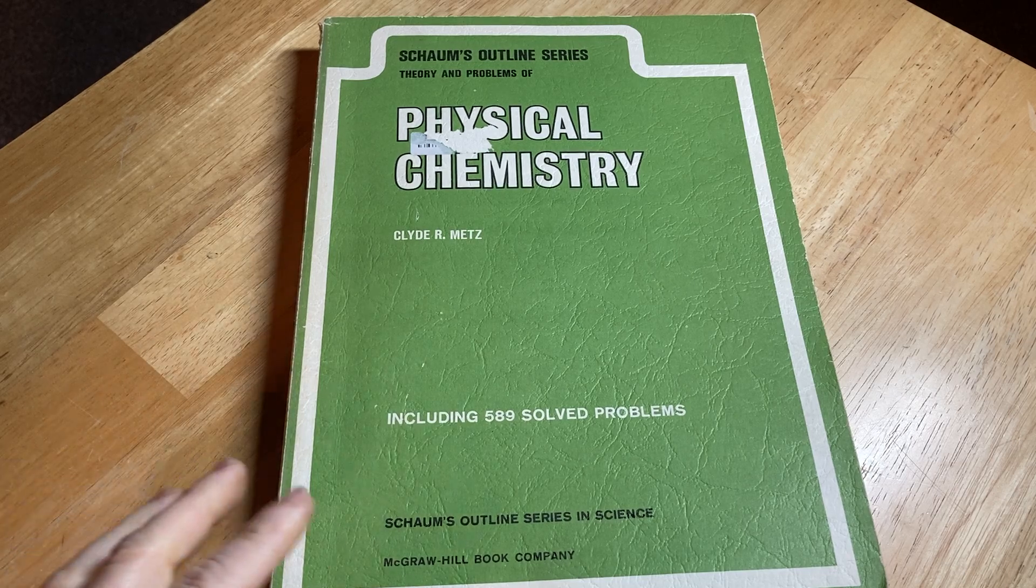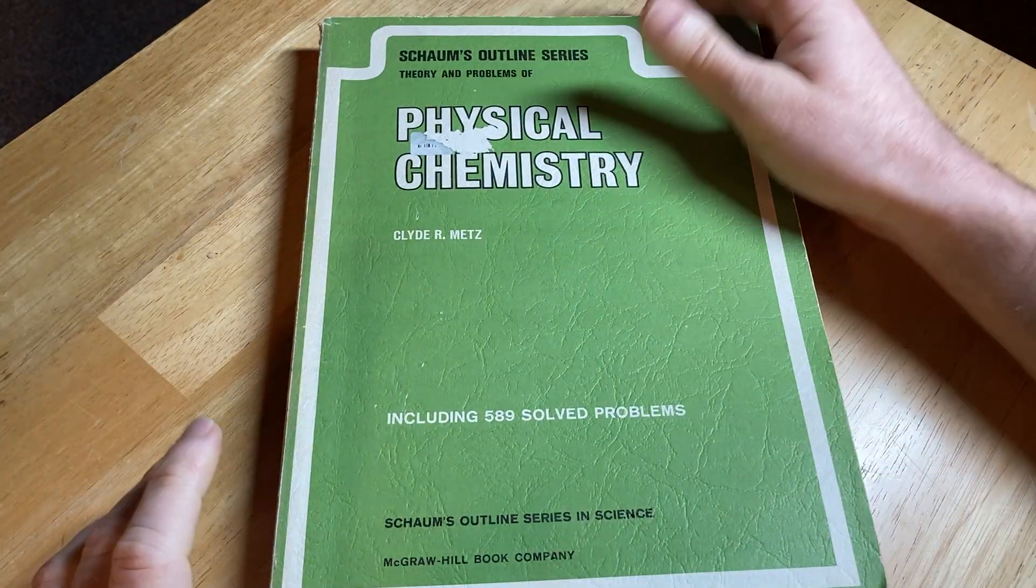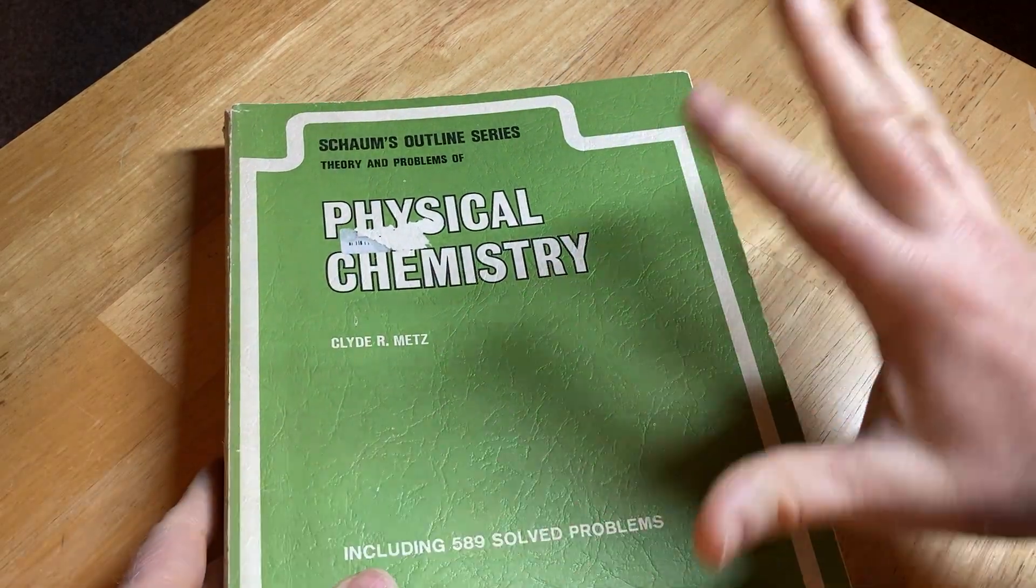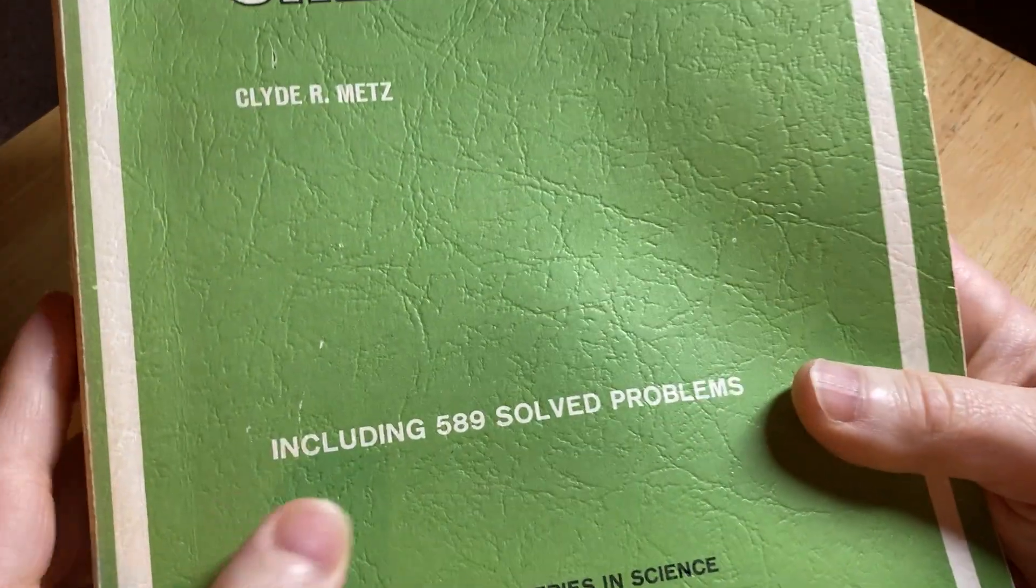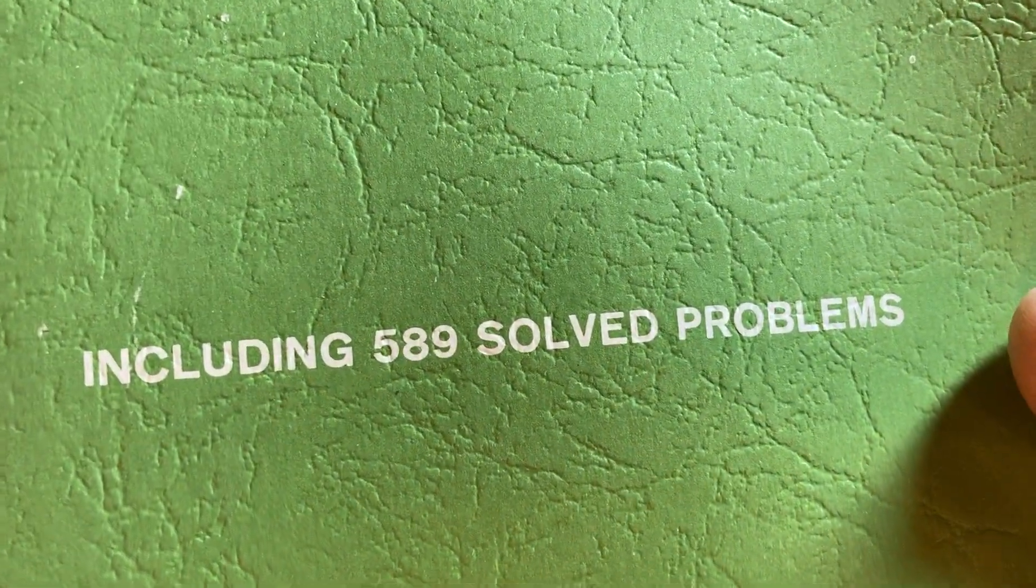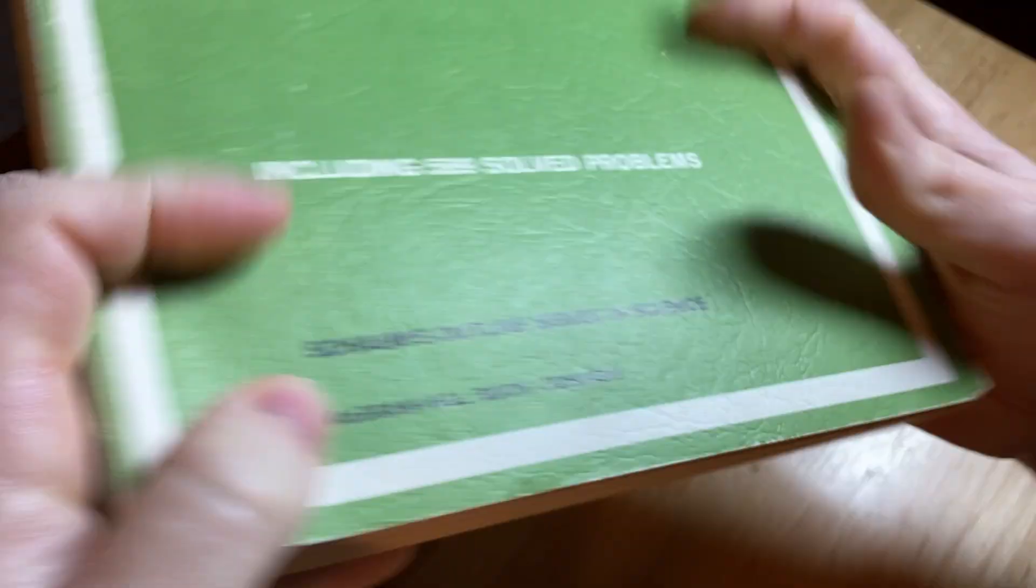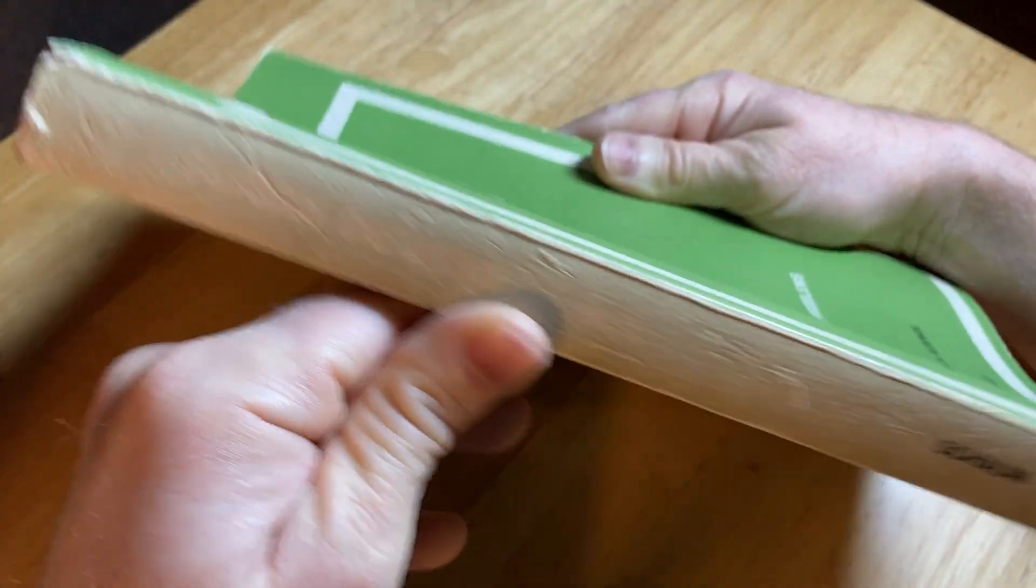This is a book on Physical Chemistry. It's part of the Schaum's Outline series, Theory and Problems. It includes 589 solved problems, and this is a thick Schaum's, very very thick. This is probably the first edition.